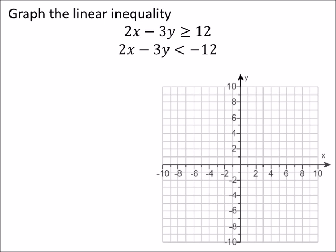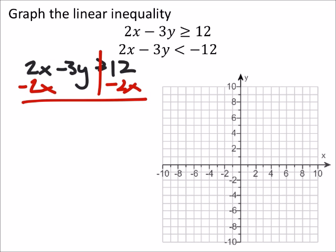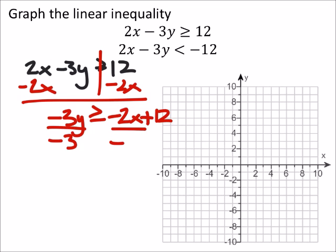This first equation, 2x minus 3y greater than or equal to 12. I'm going to subtract 2x from both sides, and I've got negative 3y equals negative 2x plus 12. Now I'll divide everywhere by negative 3, and since I divided everywhere by negative, it's going to flip the inequality.